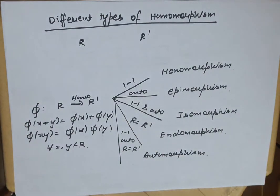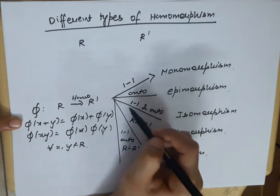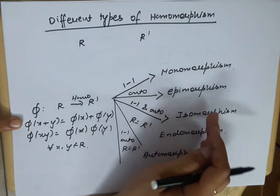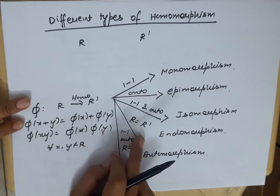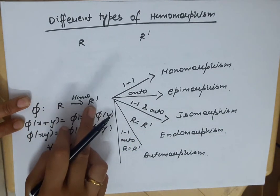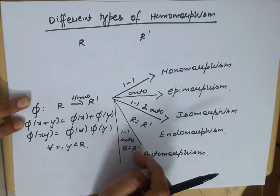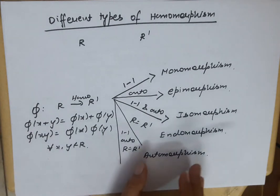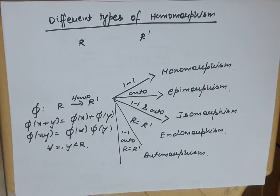Let me recall them one by one so it will be easy to understand, then I will give the formal definitions. If there is a homomorphism which is 1-1, we call it monomorphism. If it is onto, we call it epimorphism. If it is 1-1 and onto, we call it isomorphism. If domain and co-domain are the same, it is endomorphism. You can also say automorphism is an isomorphism where R equals R'.